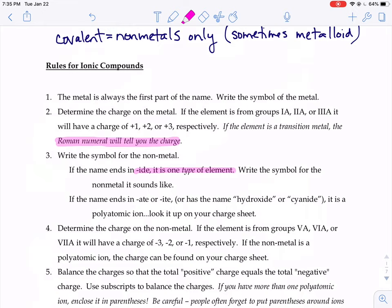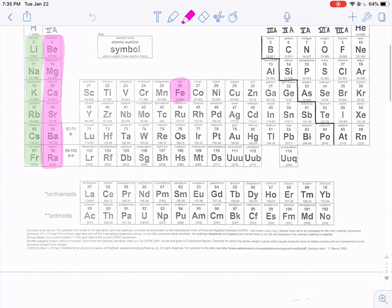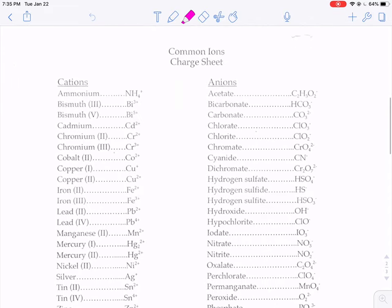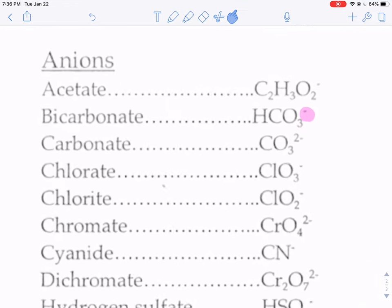If the name ends in ATE or ITE, it's a polyatomic ion, a group of atoms with a charge, and it tells you to look it up on your charge sheet. The charge sheet that it's talking about is the second page of your periodic table. So there's the periodic table. If you have a hard copy, this is what's on the backside, or the electronic copy, it's page two. Any of these where there's a group of elements with a charge, something like these guys.